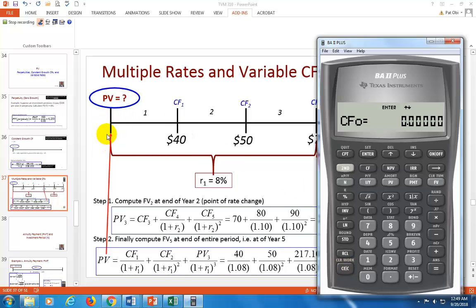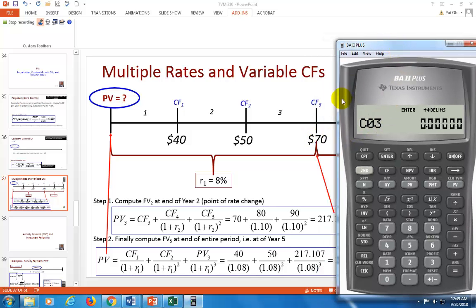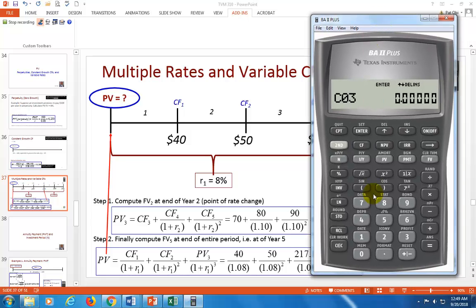So notice, there is no cash flow at time 0 here. So let's scroll to C1, which is 40. 40, enter. Scroll to C2. C2 is 50. So 50, enter. Scroll to C3. But our C3 is going to be the present value, which we calculated earlier at the end of the third period, which we found to be 217 and change. So I stored it. So recall 1, which is where I stored it, and then enter.